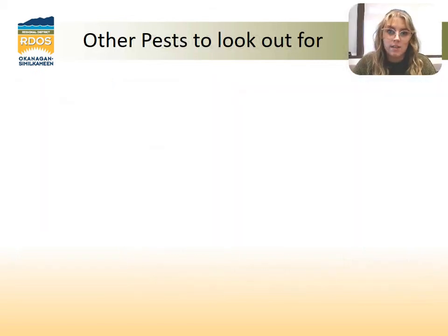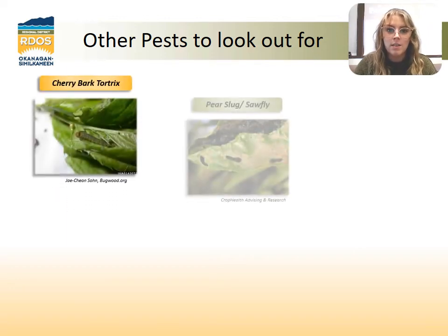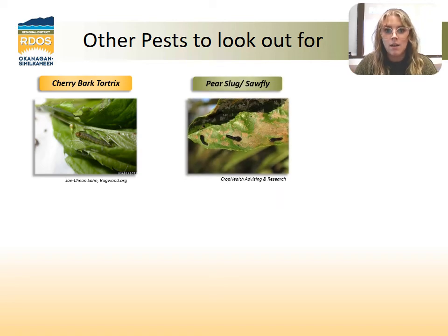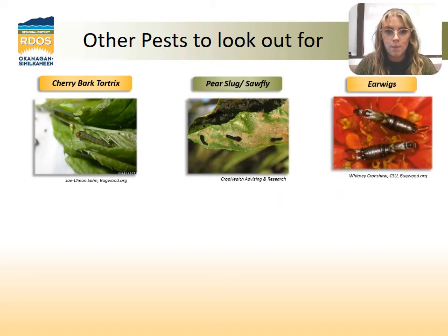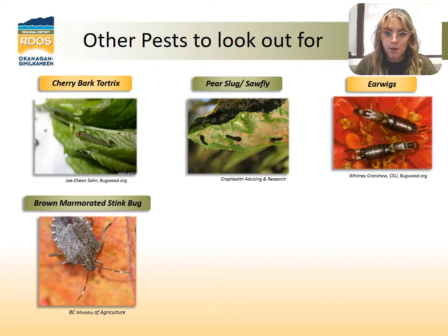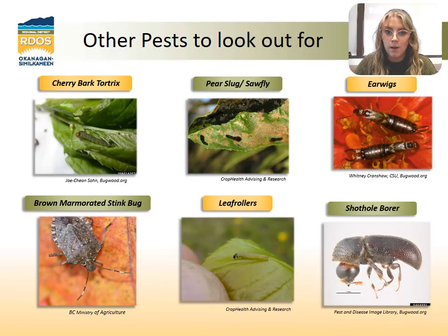These aren't the only pests that affect cherry and peach trees. Other ones you may see are the cherry bark tortrix, the pear slug or sawfly, earwigs, brown marmorated stink bug, leaf rollers, and the shothole borer. These pests can be researched further if you decide to plant a cherry or a peach tree, as there is a chance that you may see them if you plant one of these.